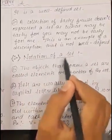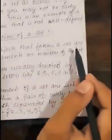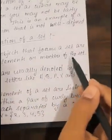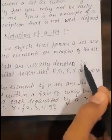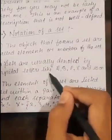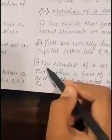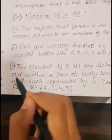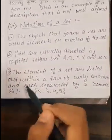Second, notation of a set. The objects that form a set are called elements or members of the set. Sets are usually denoted by capital letters like A, B, P, X and so on.